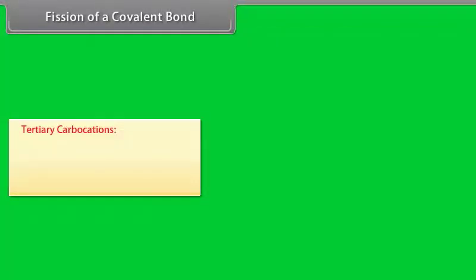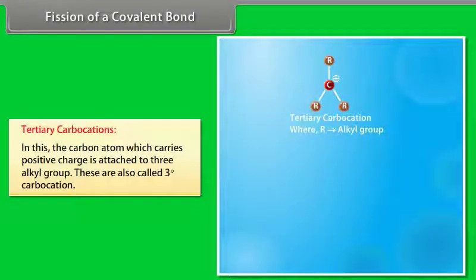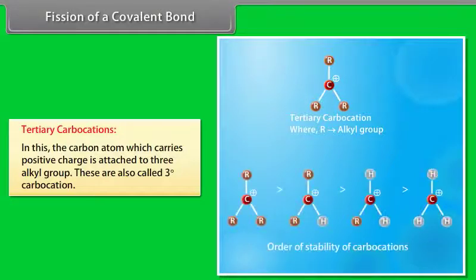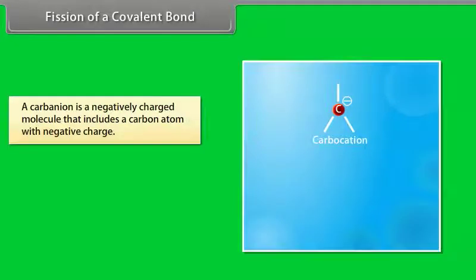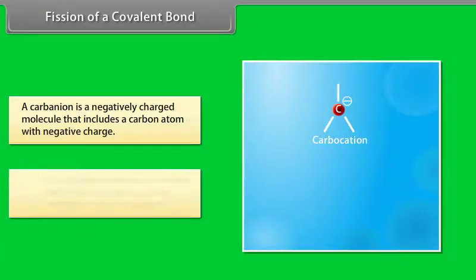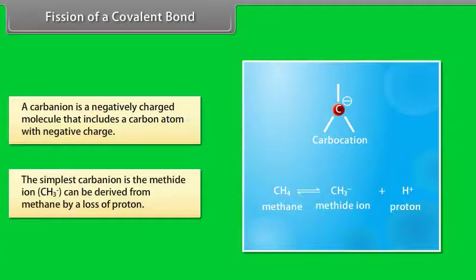In tertiary carbocations, the carbon atom carrying positive charge is attached to three alkyl groups — also called three degree carbocation. A carbanion is a negatively charged molecule that contains a carbon atom with negative charge. The simplest carbanion is the methide ion, derived from methane by loss of a proton.